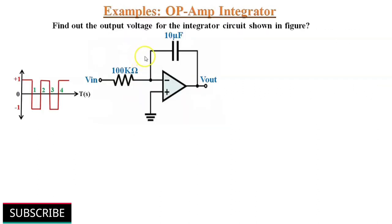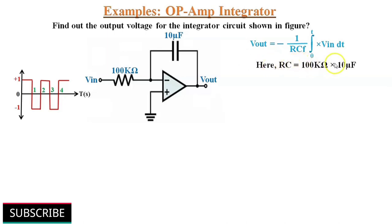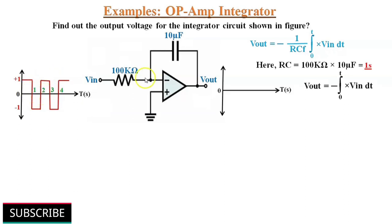Now let's solve some examples on integrator circuits. Find the output voltage for the integrator circuit shown in this figure, where the input is a square wave pulse. The output voltage Vout equals minus 1 divided by RCf times the integration of Vin dt. Here RC equals 100 kilohm multiplied by 10 microfarad, which gives 1 second. Therefore Vout equals minus the integration of Vin dt. When the input voltage to an integrator is constant, the output is a linear ramp, so the integration of a square wave produces a triangular wave. Since the input is applied to the inverting input, the output will be 180 degrees out of phase. During the first positive cycle of the input, the output will be a negative ramp, and during the negative cycle, the output will be a positive ramp.